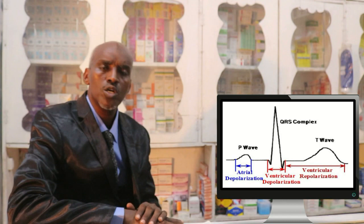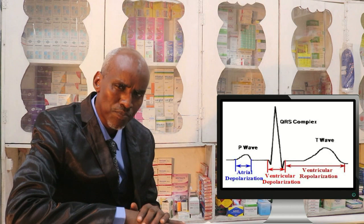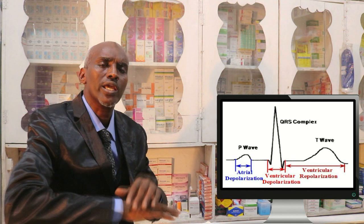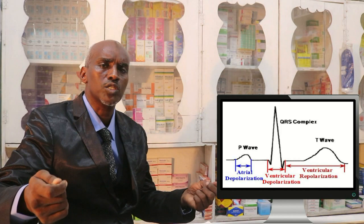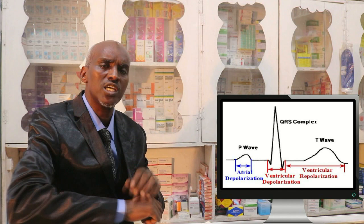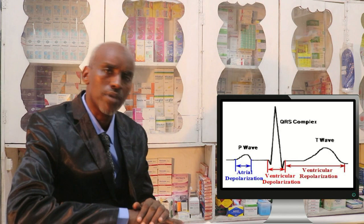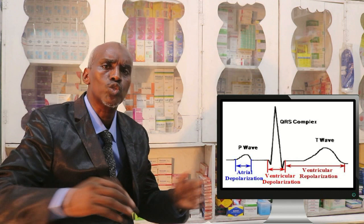We are trying to use the P-wave. In the P-wave, we are trying to identify the waveform. The P-wave is one of the main features — the P-wave represents atrial depolarization.